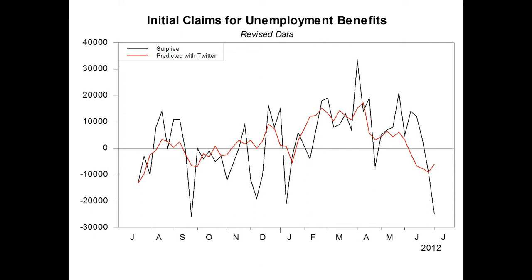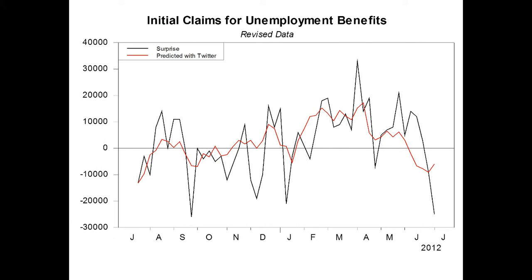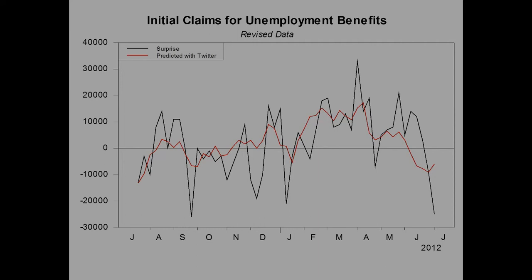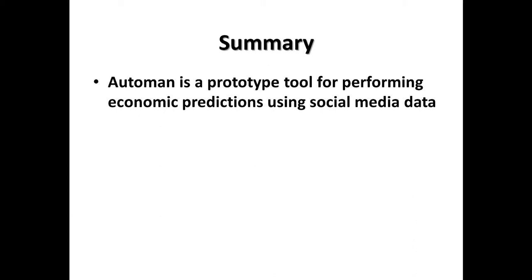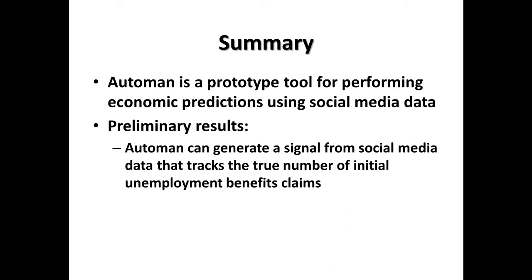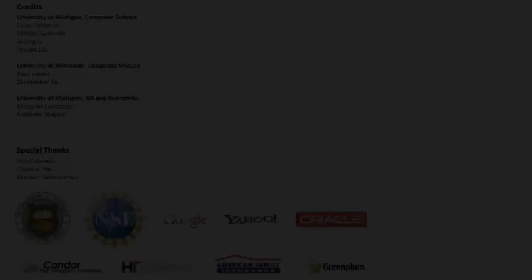Put another way, the AutoMan-derived signal can predict roughly one-third of the surprise generated by conventional economists' predictions. We have described AutoMan, a prototype tool for performing economic prediction tasks using social media data. Our preliminary results suggest that AutoMan's social media signal tracks the true level of initial unemployment insurance benefits claims, and that AutoMan's information can account for roughly one-third of the error made by a panel of economists when predicting this claims number. We thank these people and organizations for their generous help in making this research possible.